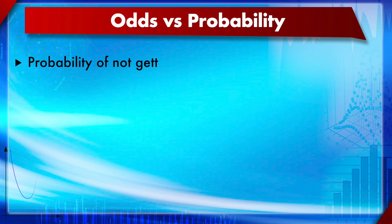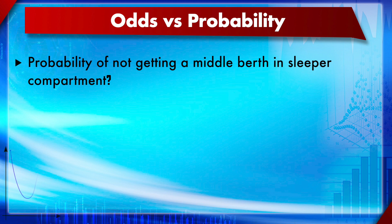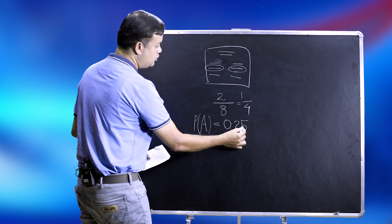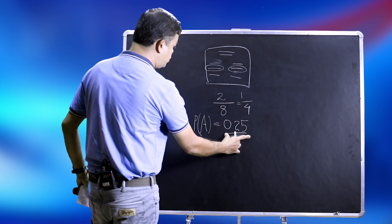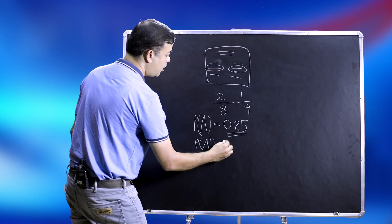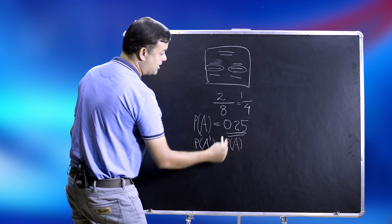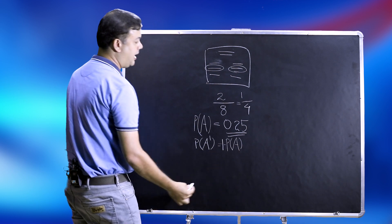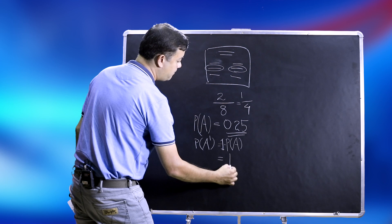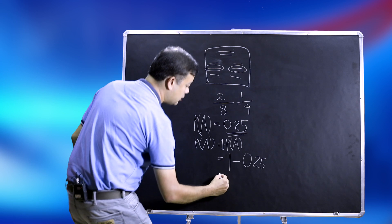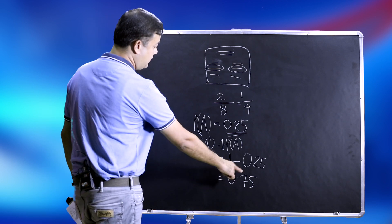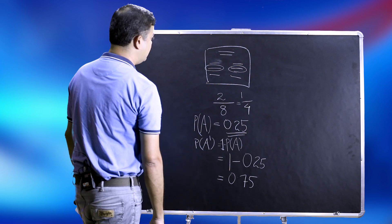Example 4: Probability of not getting a middle berth. Since P(A) = 0.25, using the complement rule: P(A') = 1 − P(A) = 1 − 0.25 = 0.75. There is a 75% chance of not getting the middle berth. In reality this probability is lower, which will be explained when discussing Bayesian logic.